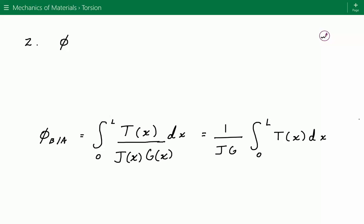We're integrating from 0 to L because B is at the free end and A is at the fixed end. That's why we're integrating along the whole length.